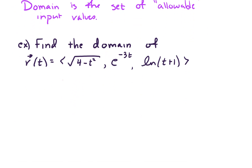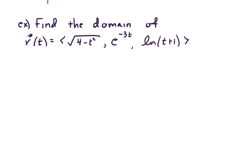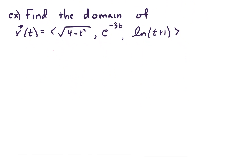In this example, we have R of t with three component functions. The first is the square root of 4 minus t squared. The second component is e to the negative 3t. And the third component is the natural log of t plus 1. To figure out the domain of the vector-valued function, we need to work on each component.